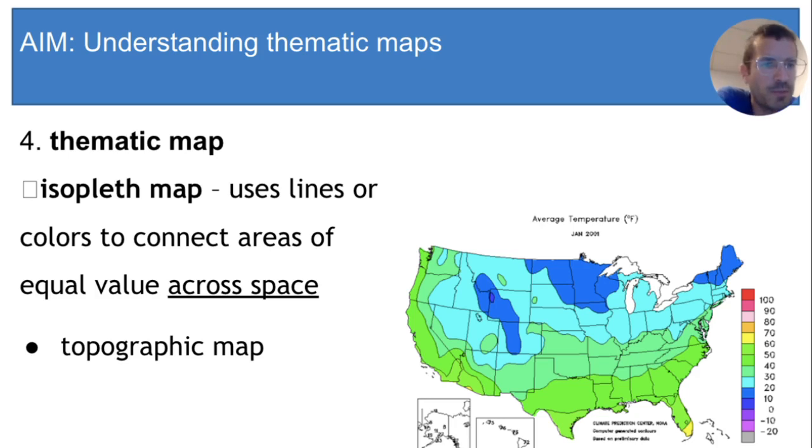Alright, we're moving on to the second type of thematic map, which is called an isopleth map. Iso means line, and isopleth maps have lines or colors that connect areas of equal value across space. A common type of isopleth map is a topographic map, and I'll show you that in a second.